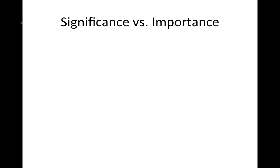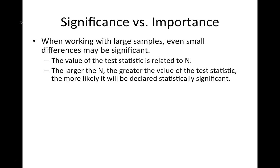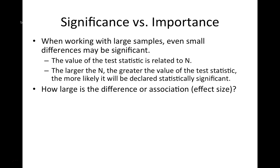Statistical significance doesn't necessarily mean our findings are important. When working with large samples or big national datasets, even very small differences or associations might be statistically significant. The value of the test statistic is related to sample size — the larger the n, the greater the value of that test statistic, and the more likely it will be declared statistically significant. So with a sample of 2,000 people, a lot of associations and differences will be statistically significant.